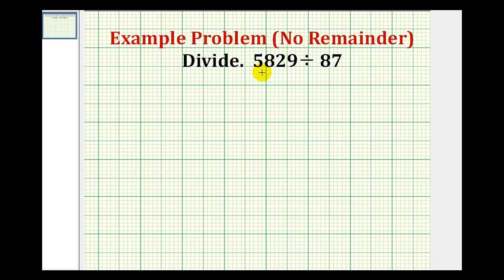Here's our division problem: 5,829 divided by 87. The first step is to set this up in long division form. We'll have our dividend, 5,829, divided by our divisor, 87.